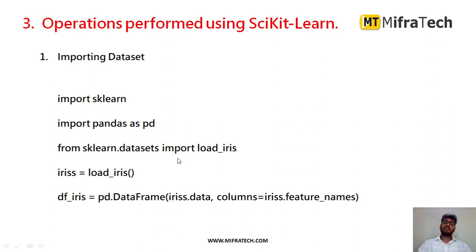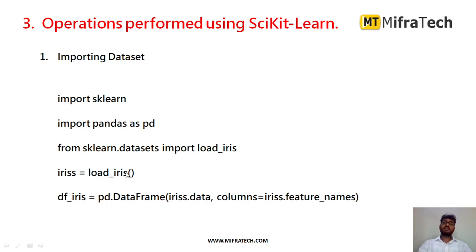To load any dataset, we use a predefined dataset already available in sklearn — the Iris dataset, which is a commonly used machine learning dataset. To load it, we use 'from sklearn.datasets import load_iris'. After importing, we assign it to a variable called iris. Then we convert it into a DataFrame using pandas: 'pd.DataFrame(iris.data, columns=iris.feature_names)'. When printed, we get a proper DataFrame.